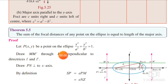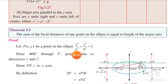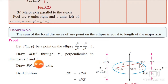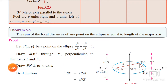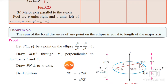Let P(x, y) be any point on the ellipse. The ellipse has its standard equation. Draw MM' through P perpendicular to the directrices L and L'.